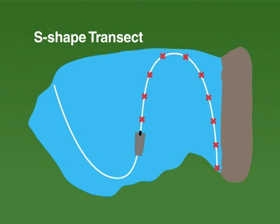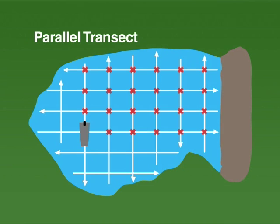One is to make an S-shaped transect through the pond, beginning in one corner near the dam and finishing on the opposite side in the upper end. Depth measurements should be spaced out as evenly as possible along the transect and then averaged.